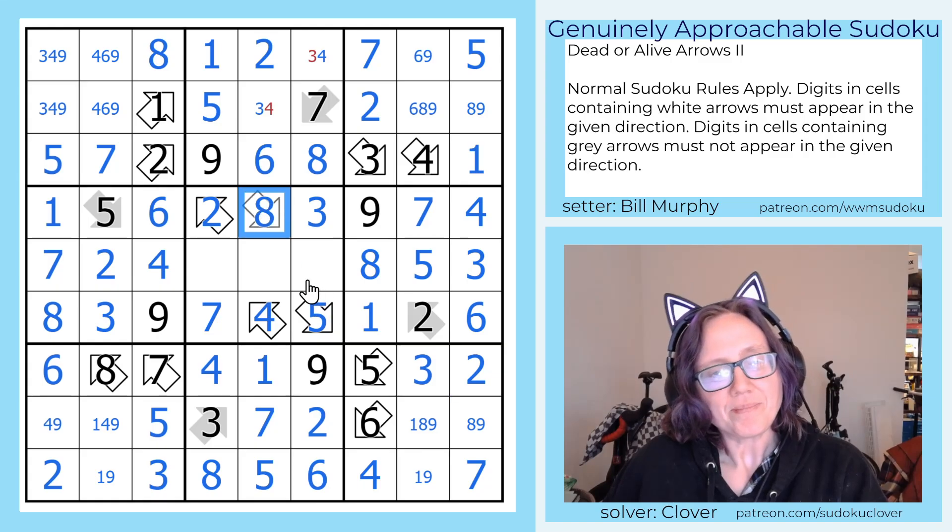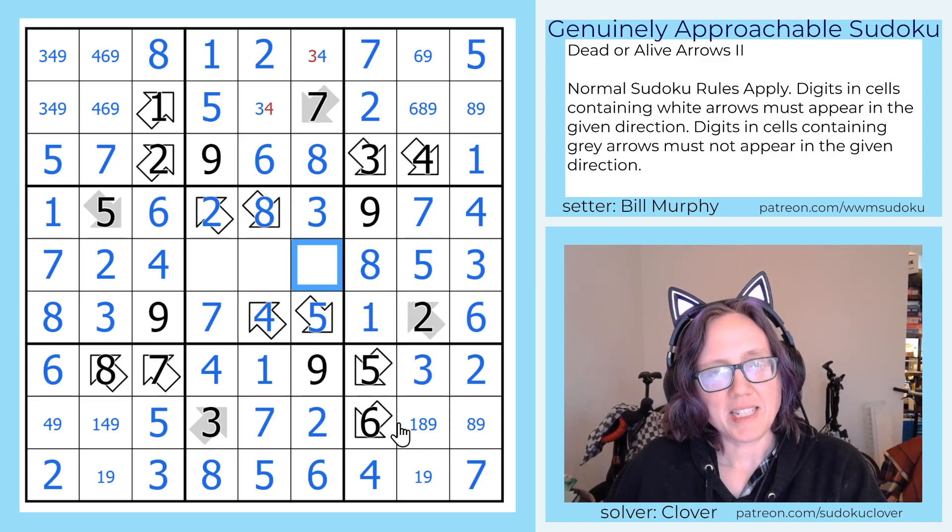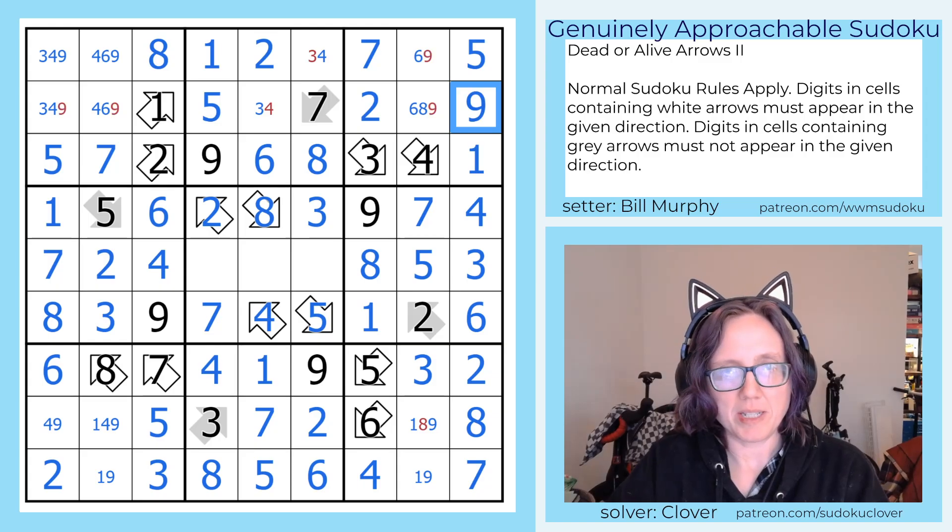That's going to make this a 7. So now this 8 arrow has to see an 8. It can't see an 8 right here. These two can't be 8, so that must be an 8. That makes this a 9.